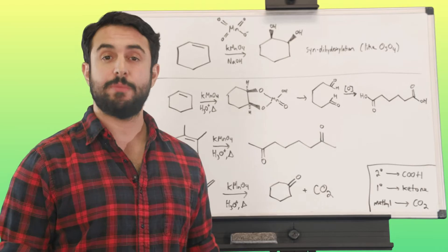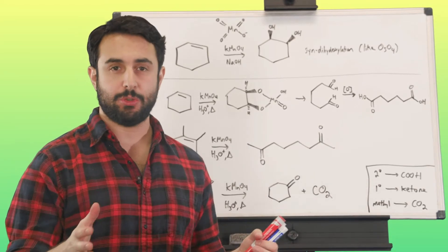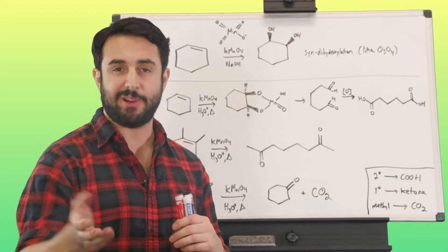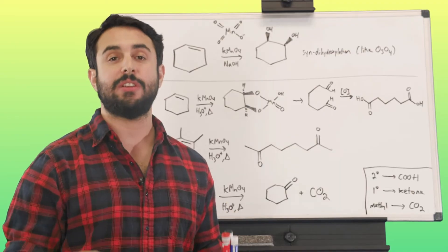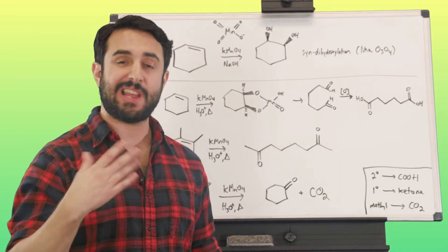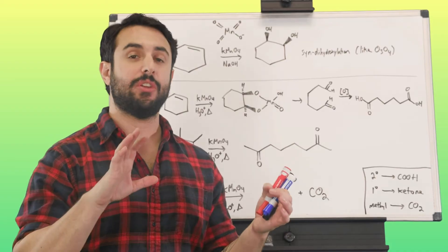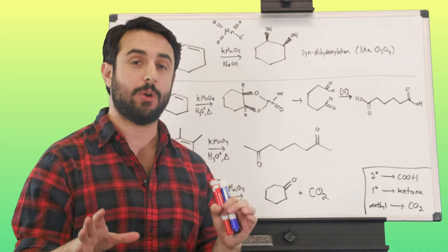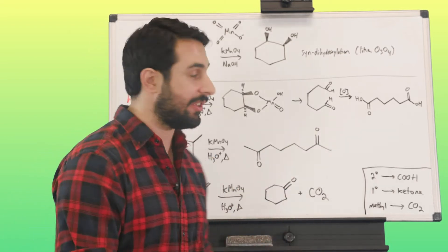So we're already familiar with potassium permanganate as an oxidizing agent, and we've seen what it can do with alcohols, primary alcohols, secondary alcohols, and aldehydes as well. Now let's look at what potassium permanganate can do to oxidize alkenes. And there's actually two different ways this can go, dependent largely on the temperature. We're going to look at cold and hot conditions.